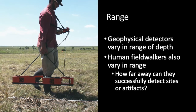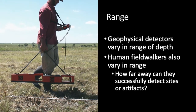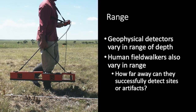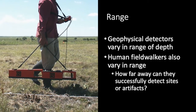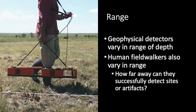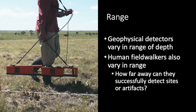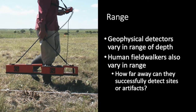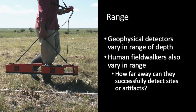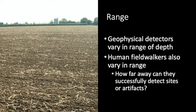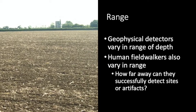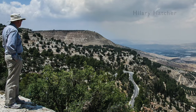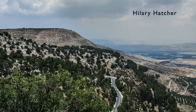One characteristic of detectors is their range. Geophysical detectors, for example, vary in how deeply they can penetrate the ground, while field walkers vary in how far away they can see artifacts of various kinds.